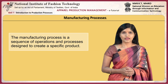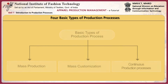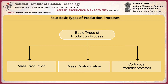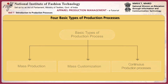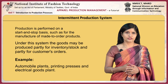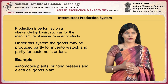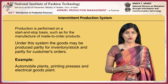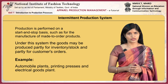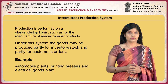Manufacturing processes. The manufacturing process is a sequence of operations designed to create a specific product. There are four types of basic production processes: intermittent production system, mass production, mass customization, and continuous production process. In the intermittent production system, production is performed on a start-and-stop basis, such as for make-to-order products. Goods may be produced partly for inventory and partly for customers' orders. Examples include automobile plants, printing press, and electrical goods plants.